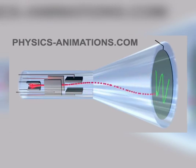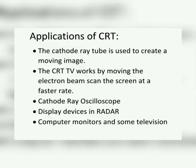Now we will see the applications of CRT. The cathode ray tube is used to create a moving image. The CRT TV works by moving the electron beam to scan the screen at a faster rate. It is used in cathode ray oscilloscopes, display devices, and radar, as well as in computer monitors and some televisions.